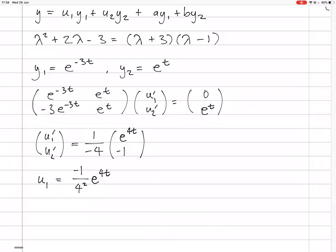And u2 is the integral of a quarter, which is just a quarter t. Now that's actually itself, because we've already written down that y is u1 y1 plus u2 y2. And now we've said what all the individual items in there are.